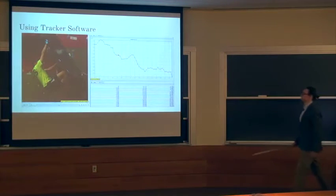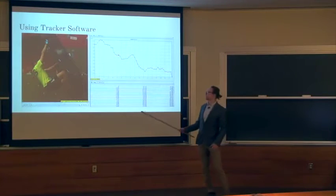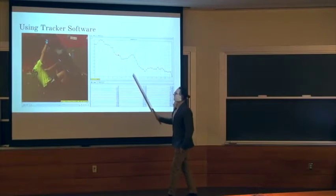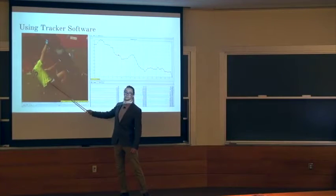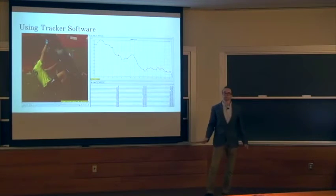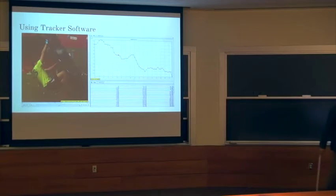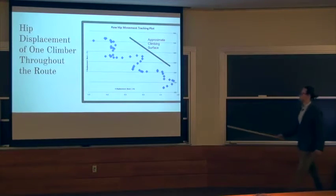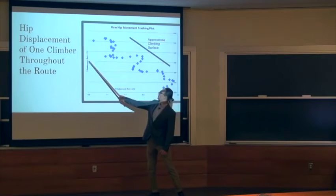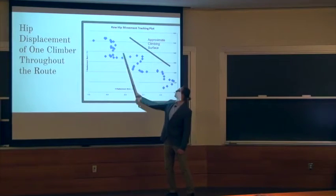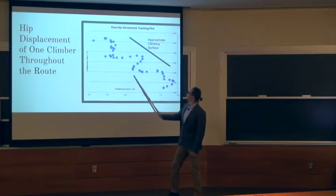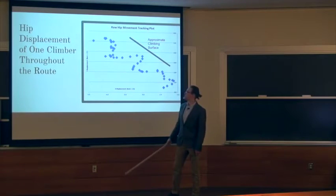This is just an idea of what the interface was for me. After I took a side view video of a climber, I would put it into this tracker software, and then I would go through frame by frame clicking the hips every time, and I would get a plot something like this, time, x, y values. This is that same data shown in a different way. Here's the x displacement and the y displacement of the hips going throughout the climb. Here's an approximate climbing surface, and as you can see, this climber's hips are kind of oscillating in and out of the wall as they move up through the climb.